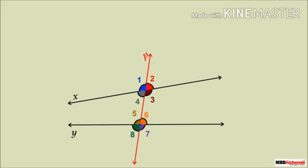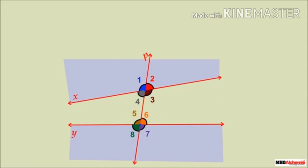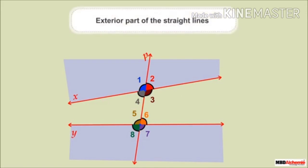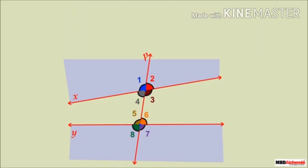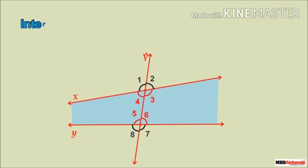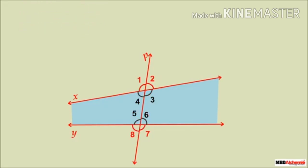Can you shade the region which lies between the two straight lines X and Y? This shaded region lies between the two straight lines and is called the interior part. The part of the plane that does not lie between the straight lines is called the exterior part. Angles 3, 4, 5 and 6 lie in the interior part and are called interior angles. Angles 1, 2, 7 and 8 lie in the exterior part and are called exterior angles.